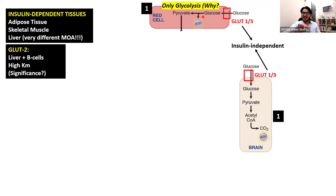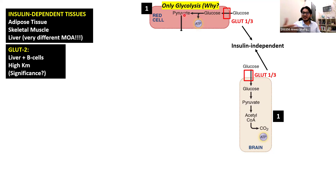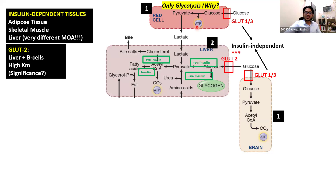So the red blood cells can only carry out anaerobic glycolysis. They will take in glucose, glucose gets converted to pyruvate, pyruvate won't get converted to acetyl-CoA because that happens in the mitochondria and red blood cells don't have mitochondria. So the pyruvate gets shunted into lactic acid production or anaerobic metabolism. That's the only metabolic pathway active in red blood cells.